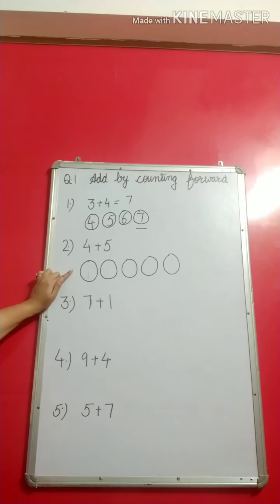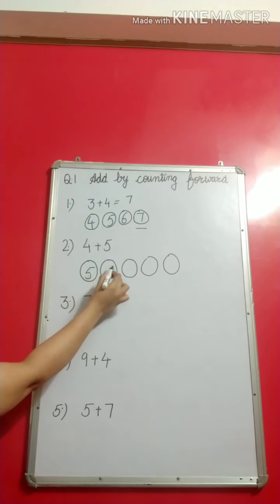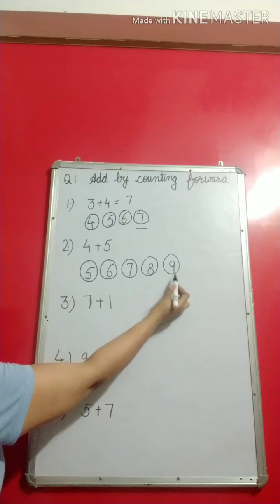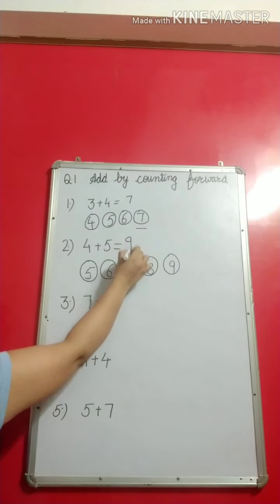So what I will be doing now is I will start counting after 4. I will write the first number as 5, then 6, 7, 8, and then 9. This is the way of writing 5, 6, 7, 8, and 9. Which number have I reached this way? 9 is my answer.